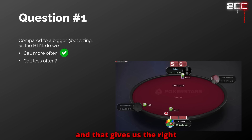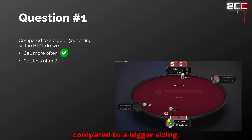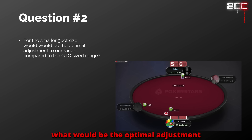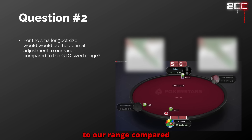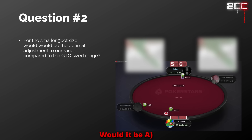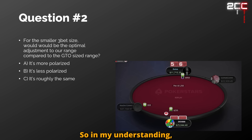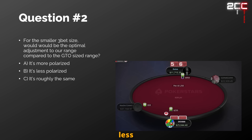If we choose this smaller three-bet sizing, what would be the optimal adjustment to our range compared to the GTO sizing? How would our range change — would it be A) more polarized, B) less polarized, or C) roughly the same? In my understanding, it should be more linear, so it should be B — less polarized.